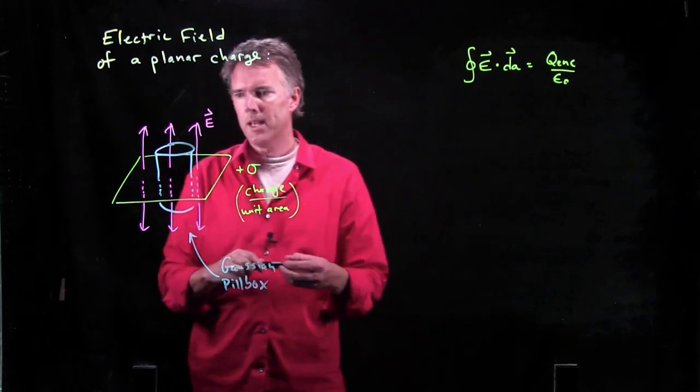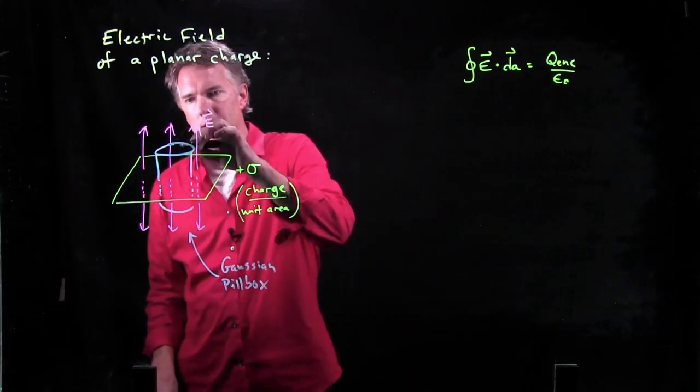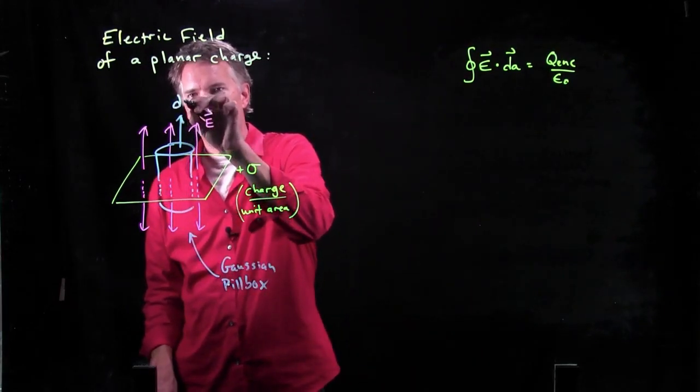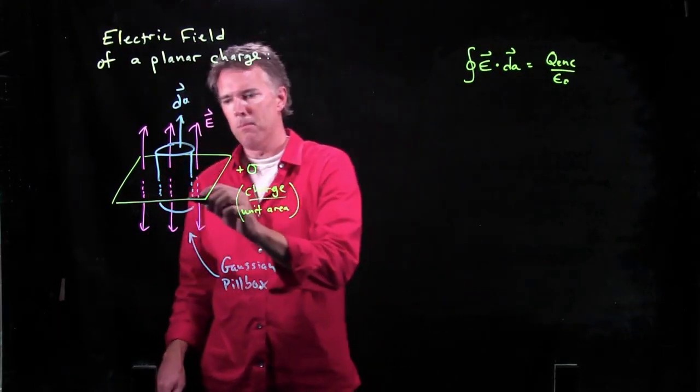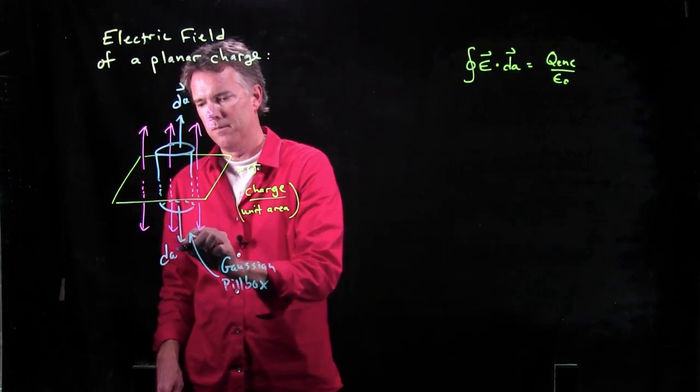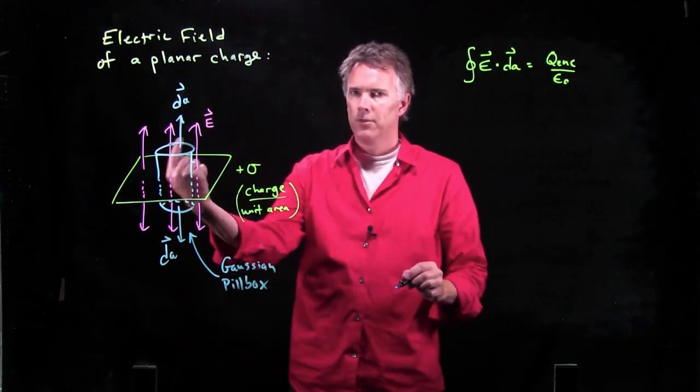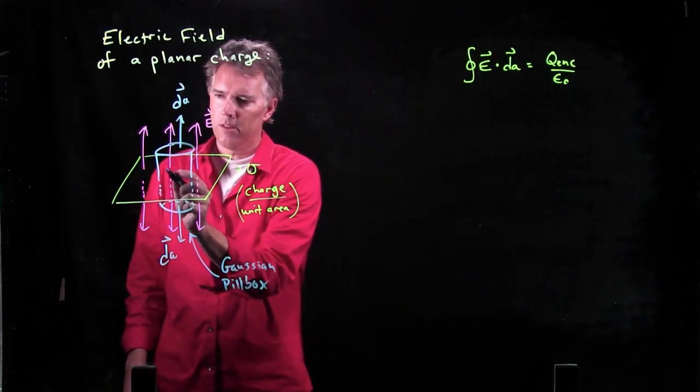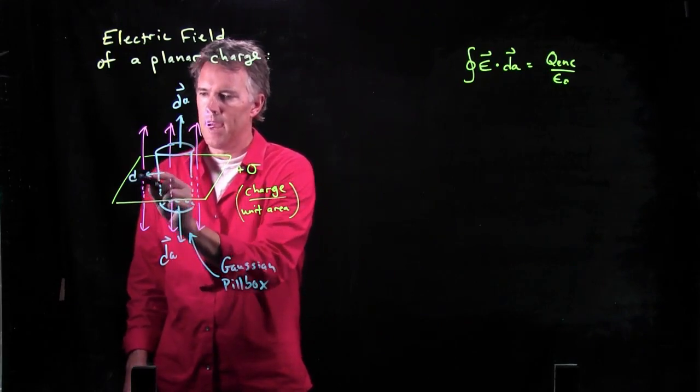All right. If E is pointing up everywhere, DA for here is also pointing up. DA on the bottom side is pointing down. Then we have to go around the edge and the edges of this thing are pointing out in that direction.